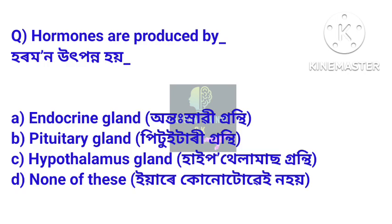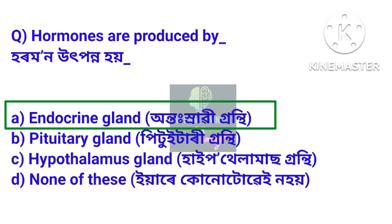Next question: hormones are produced by — hormone utpanna hoy? Answer: Endocrine gland. Antrasrabi gronthi — hormones are produced by the endocrine gland.